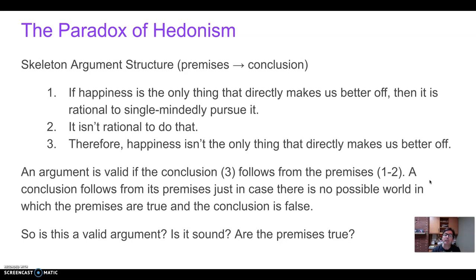This is a point about argument validity. An argument is valid if the conclusion follows from the premises — in this case, if 3 follows from 1 and 2. A conclusion follows from its premises just in case there is no possible world in which the premises are true and the conclusion is false. This does look like a valid argument: if we accept the first two premises, we have to accept the conclusion. There's no world in which 1 and 2 are both true but 3 is false. But that doesn't mean it's an argument we must accept — it just means it's valid.